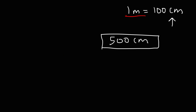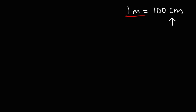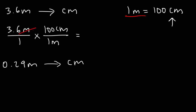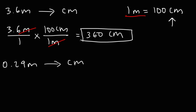Now for the sake of practice, let's try two more examples. Go ahead and convert 3.6 meters into centimeters and also 0.29 meters into centimeters. Let's start with the first one — rewrite what we're given on a fraction. We're going to put the 1 meter on the bottom and the 100 centimeters on the top of the second fraction. So it's going to be 3.6 times 100, which is 360 centimeters.